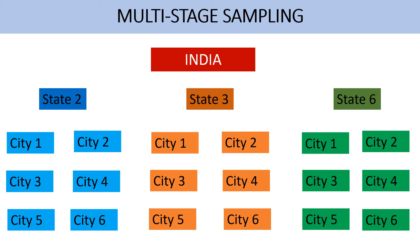Again I will divide State 2 into different cities — City 1, City 2, City 3, City 4, and so on. I have divided State 2 into different cities. Again State 3 into different cities, and State 6 into different cities. These different cities are different clusters. So State 2 is divided into different clusters, State 3 is divided into different clusters, and State 6 is divided into different clusters.